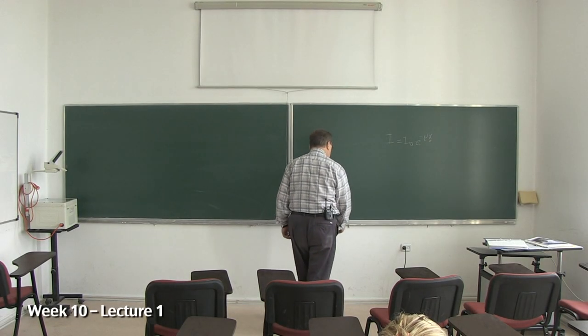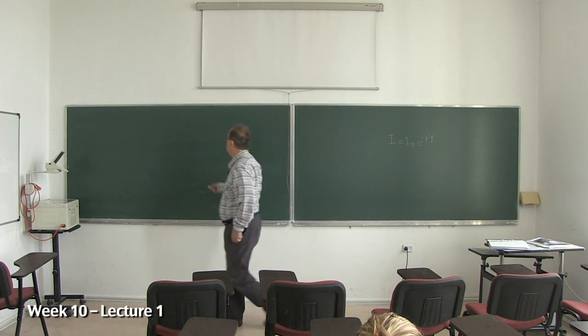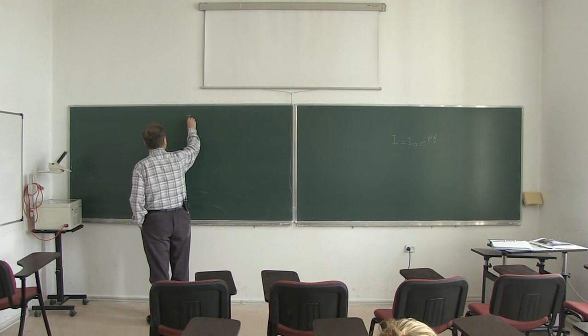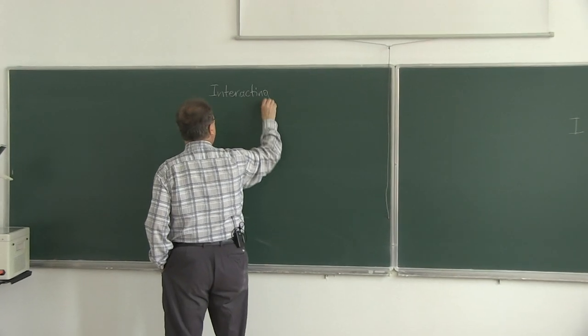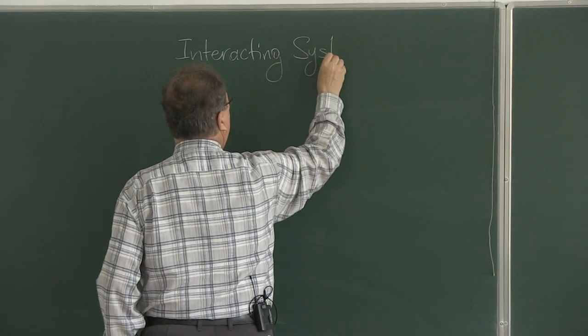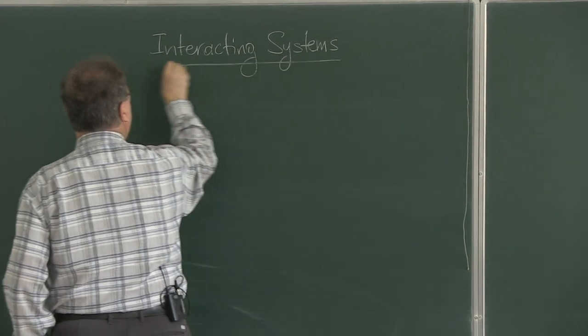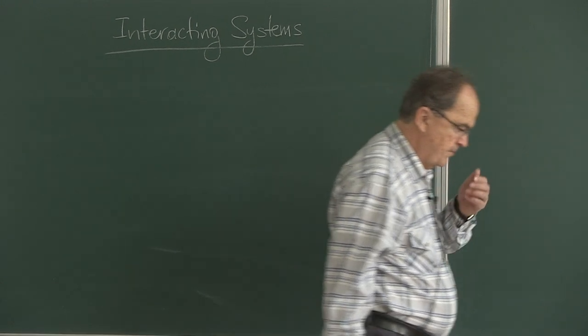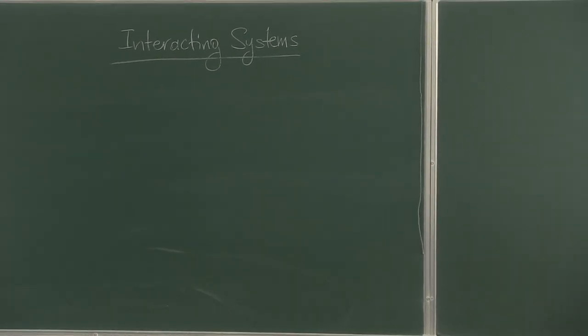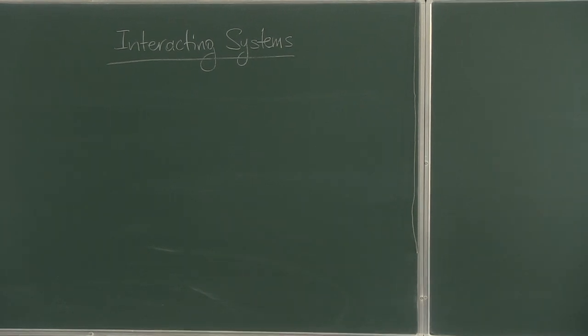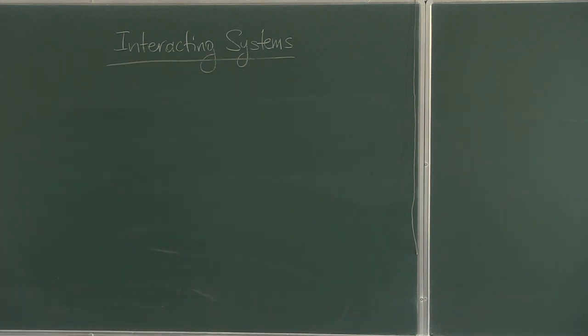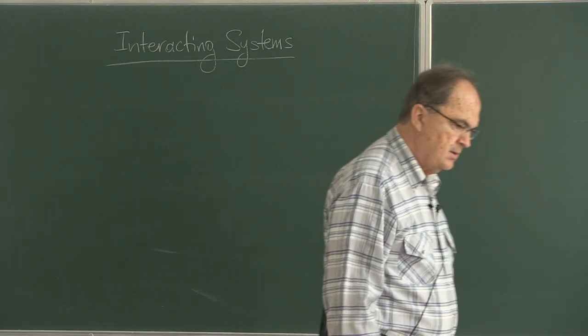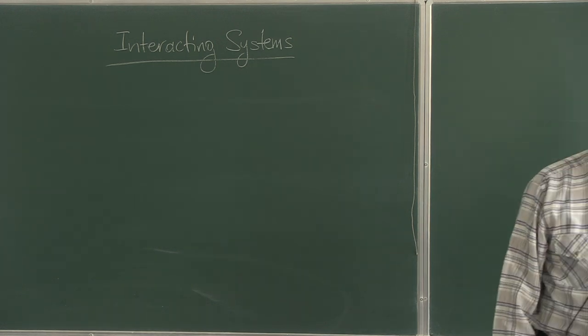This is the first lecture on interacting systems. Up to now, we have discussed ideal systems, which are non-interacting systems. If you want to make contact with experimental results, you have to add the inter-particle interactions into your calculation.